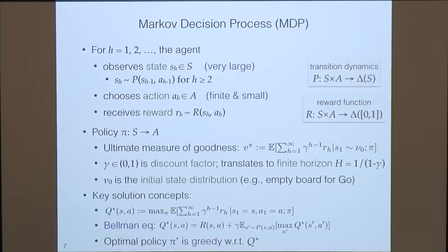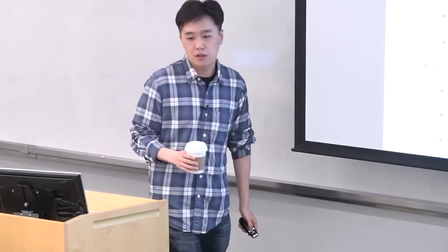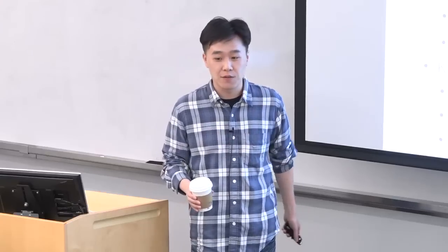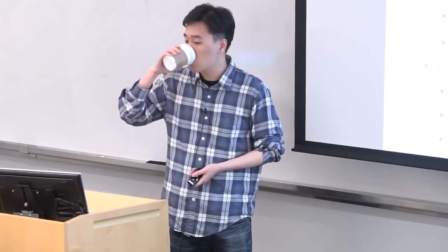An audience member asks whether statistical learning theory results for ERM (Hoeffding, union bounds) hold for regression too, since this is a regression problem. The speaker confirms: yes, straightforwardly — instead of 0-1 loss, you use a bounded squared loss, and it concentrates the same way. The logarithmic dependence shows up when you do a union bound over all finite hypotheses. For infinite classes you go to covering numbers or pseudo-dimension, but many of those go back to finite classes — covering a continuous space with a finite but exponentially large set of cover centers.